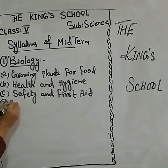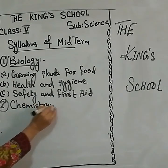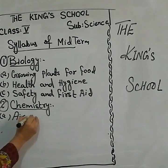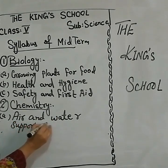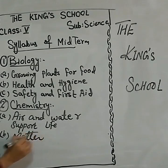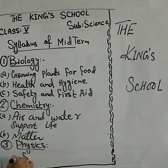Chemistry portion includes two chapters: 'Earth and Water Support Life,' and 'Metals.' The third portion is the physics portion, which includes only one chapter: 'Shadows and Eclipses.'